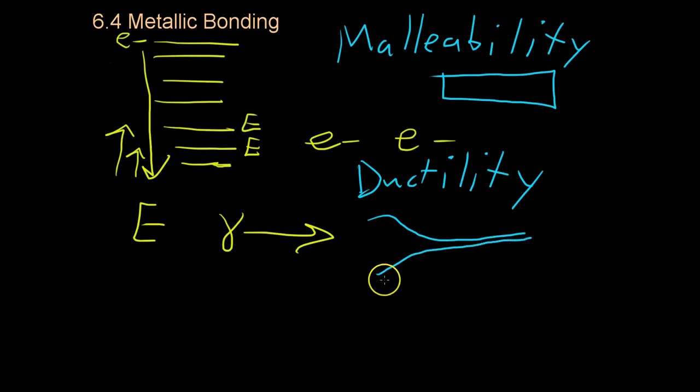And the reason metal can do this, whereas ionic compounds cannot, is because the crystal lattice of metal isn't made of such a robust structure as it is in ionic compounds. So, in metals, because there's no repulsion between certain ions as there are in ionic compounds, these atoms can easily slide past each other in order to form whatever shape you like.